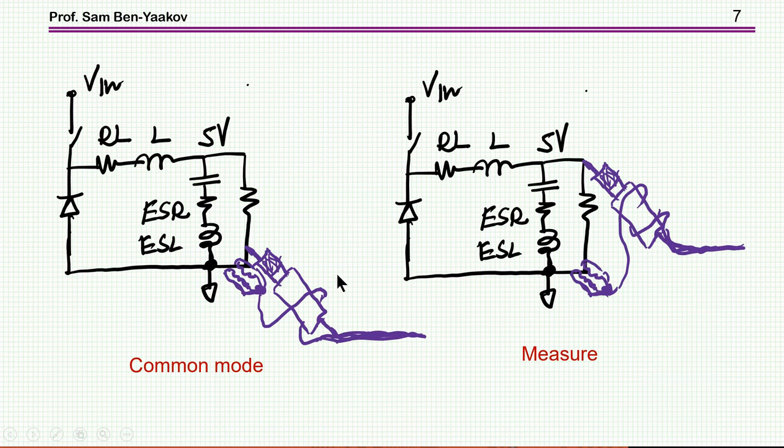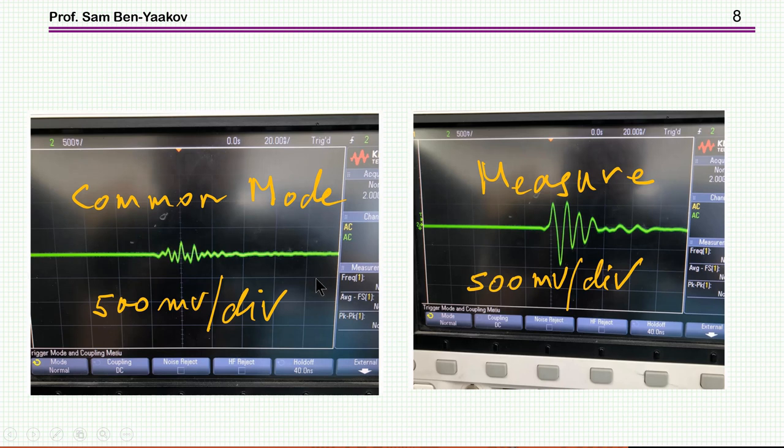In order to make sure that we don't have a problem of a common mode, we ran a common mode measurement. That is putting the tip of the probe of the oscilloscope that goes to the oscilloscope and the ground at the ground side. And then this is the measurement and compare the two.